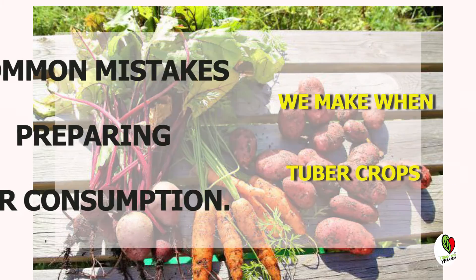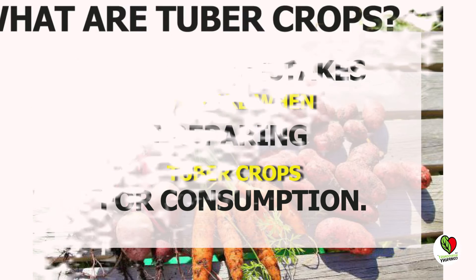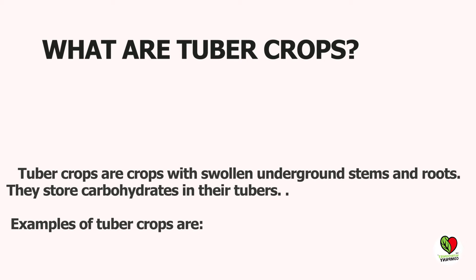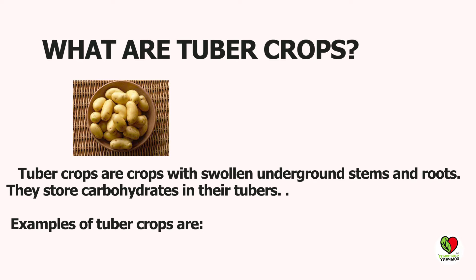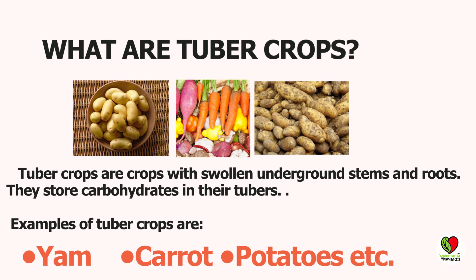Common mistakes we make when preparing tuber crops for consumption. Tuber crops are crops with swollen underground stems and roots that store carbohydrates in their tubers.